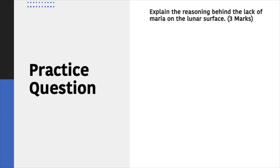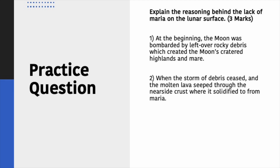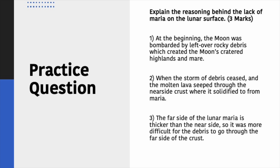Let's have a look at a practice question: Explain the reasoning behind the lack of lunar Maria on the moon's far side. This is a three-mark question, so you need to make three points. One example answer: First, the moon was bombarded by leftover rocky debris which created the moon's cratered highlands and Mare — one mark. When the storm of debris ceased, molten lava seeped through the near side crust where it solidified to form Maria — second mark. The far side crust is thicker than the near side, so it was more difficult for lava to pierce through the crust on the far side — final mark.